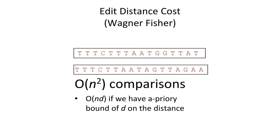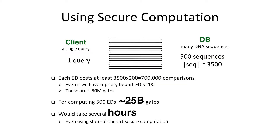What is edit distance? You take two sequences and try to morph one into the other by doing letter substitutions, insertions, or deletions, finding the shortest sequence of changes. The Wagner-Fisher algorithm solves this; in general it works in O(n²) comparisons, or O(n·d) if you have an a priori bound d on the distance. We want to take our sequence, compute edit distance to all 500 sequences in the database, find the smallest five, and return the results.